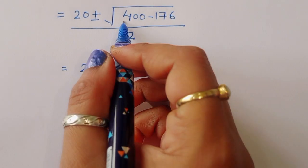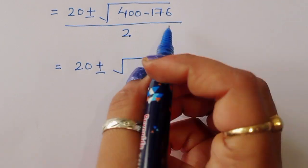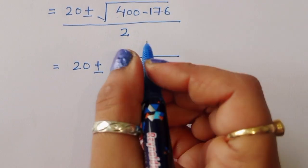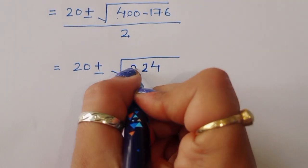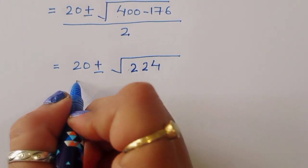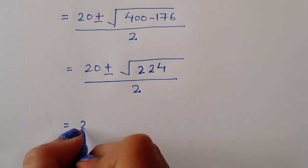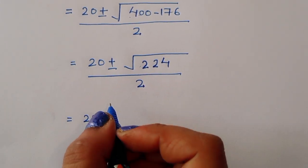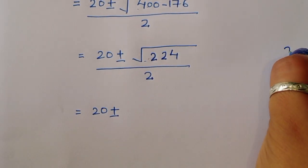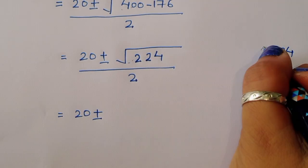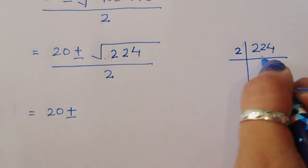Now we simplify the square root of 224. We find the factors of 224.